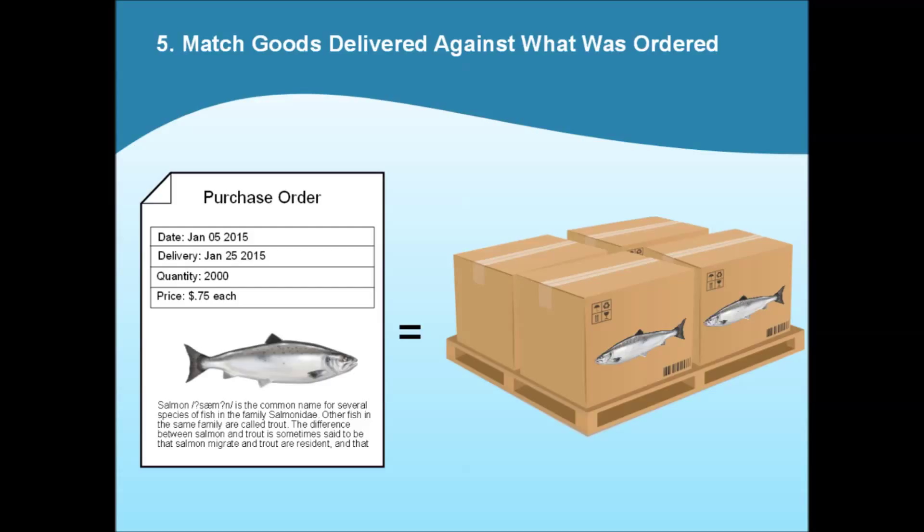If your goods receivable team know what you ordered, then they can quickly get in touch with the supplier if they are missing items or incorrect items. Many suppliers require you to notify them of incorrect deliveries within 24 hours, which is easy to spot if you can cross-reference the supplier delivery note with the purchase order.